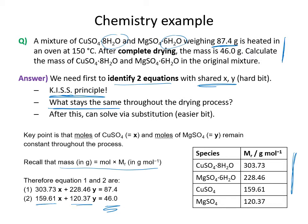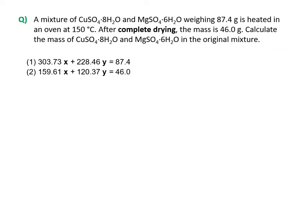Once we have those two equations, we can solve by substitution. We rearrange equation 2 for x: x = (46.0 − 120.37y) / 159.61. I recommend doing this in two steps if you're less comfortable with algebra, to avoid mistakes. This rearranged form is called equation 2a.